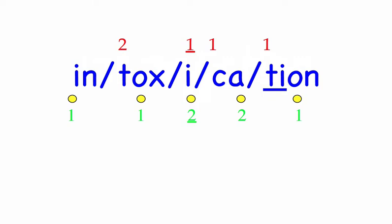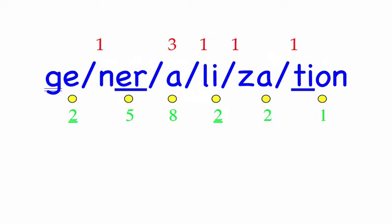Generalization. That statement is an oversimplified generalization. This is a whopping six syllables in length, and that's about as long as English words get. First syllable: Je, two sounds, J-E. Ner, two sounds, N-Er. Al, one sound. Li, two sounds, L-I. Z, two sounds, Z-A. Sean, three sounds, Sh-Ah-N. Generalization. Mark the word. Generalization.